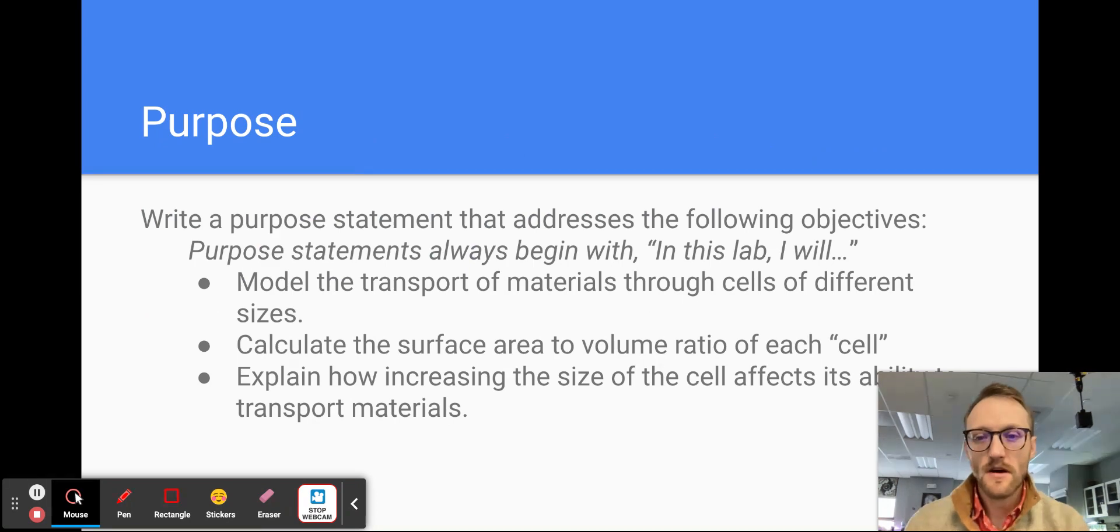The purpose of this lab is we want to model the transport of materials through different cells, or cells of different sizes. It kind of makes sense. So it's like a city. When you drive through Sheridan, it might take like five minutes. But if you tried to drive through Denver, it might take you a couple hours. So the bigger the cells, we're going to see that time that it takes to get materials in and out of that cell is going to take a lot longer.